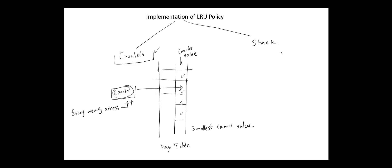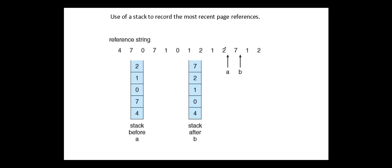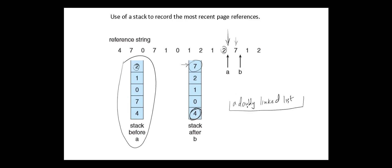The second approach is to use a stack. Whenever a page is accessed, pull that page from the middle of the stack and place it on the top of the stack. The least recently used page will always be at the bottom of the stack. For example, before a given point, two is at the top of the stack. Next, we reference page seven, so seven should be moved to the top of the stack, and the least recently used page is four. For this reason, some systems use a doubly linked list data structure to implement least recently used instead of using stacks.